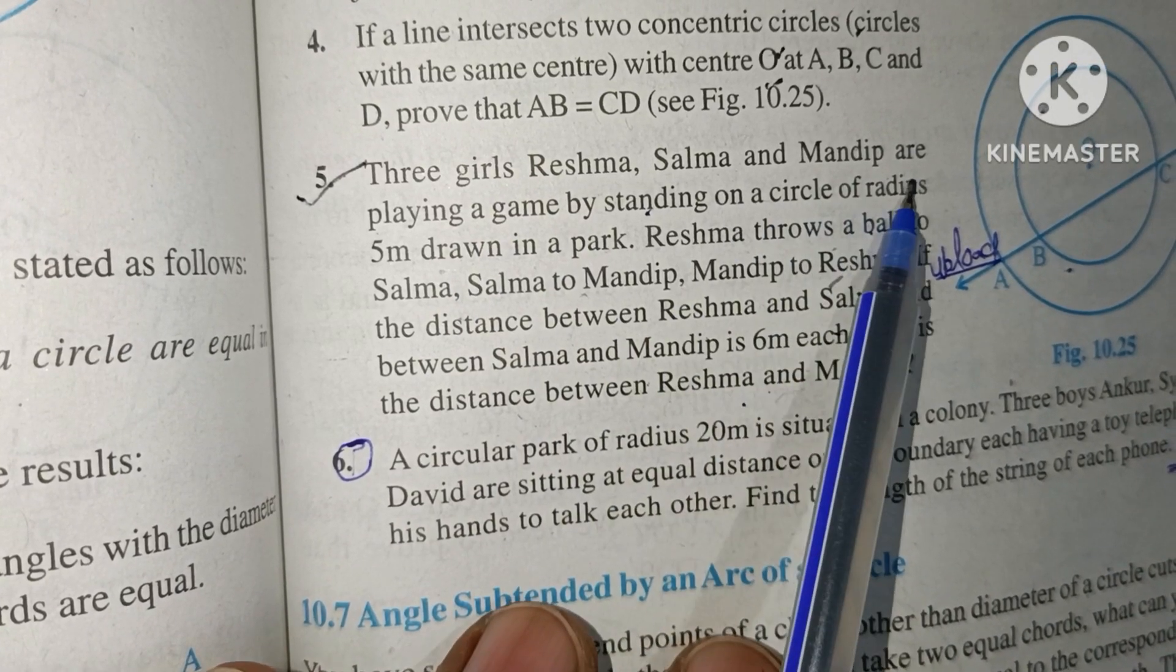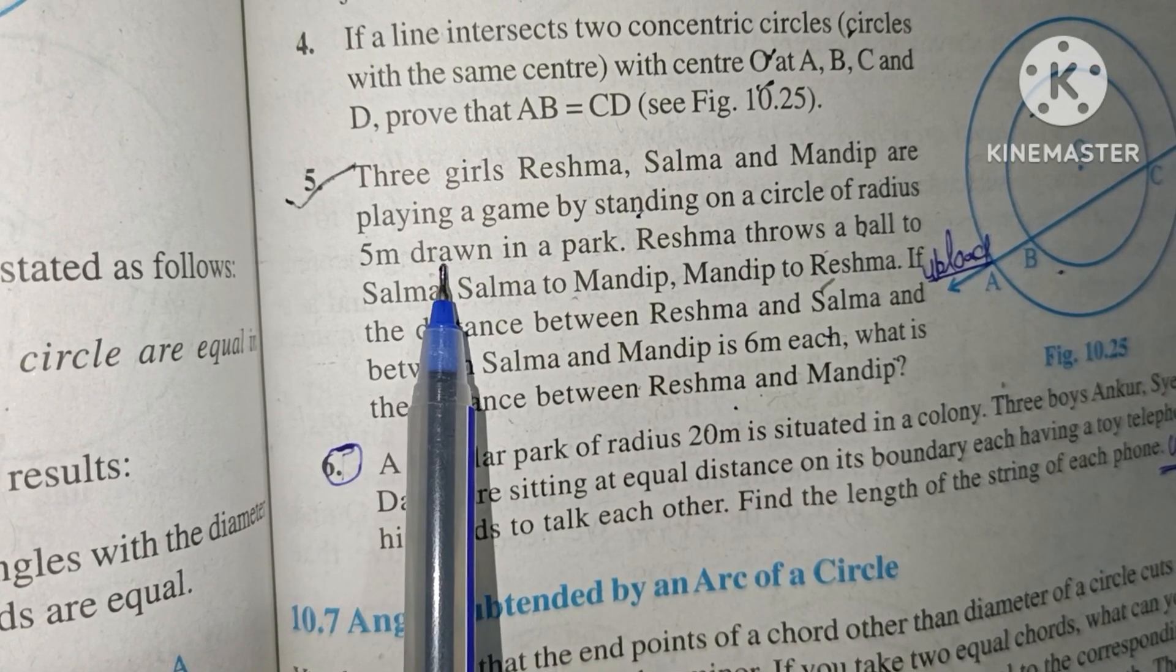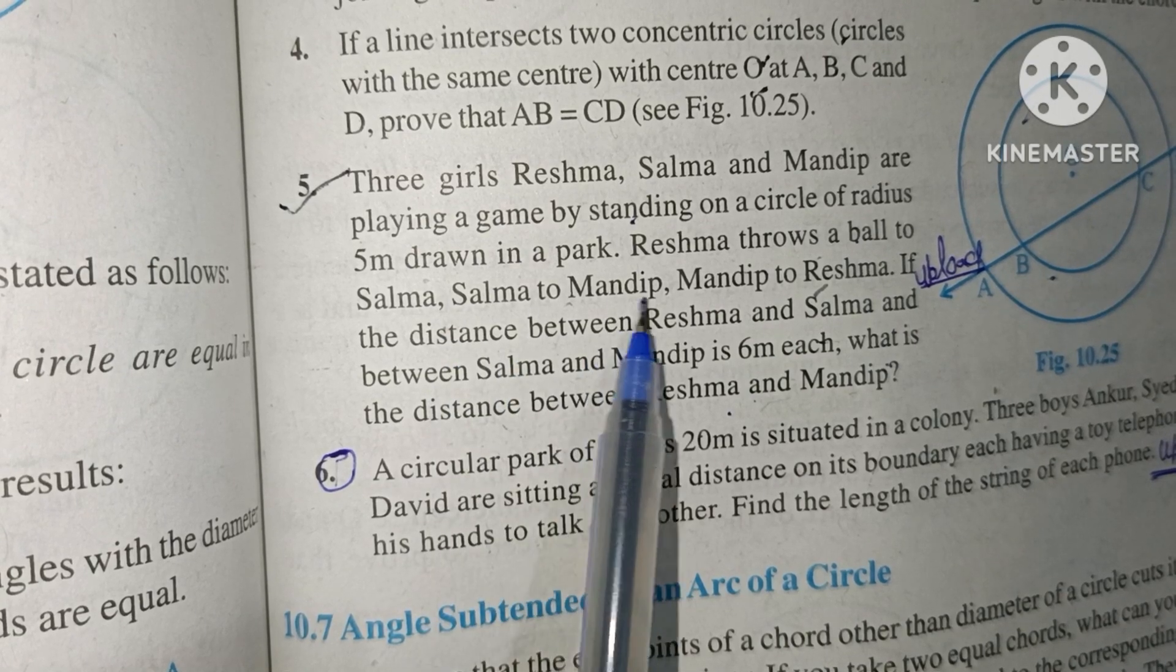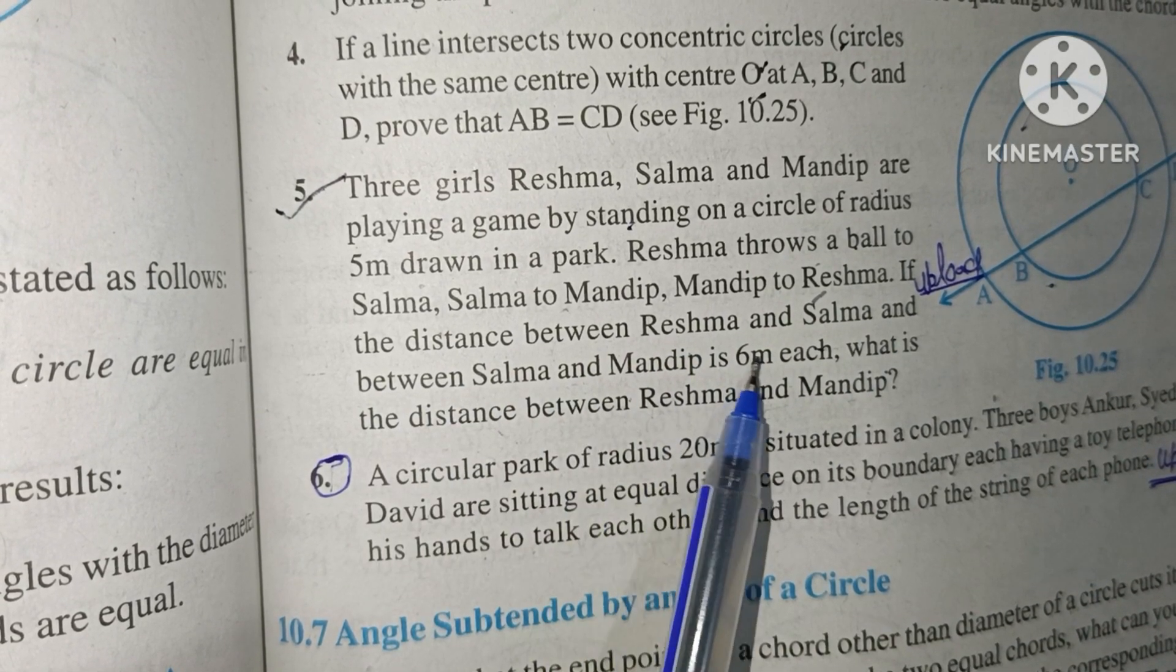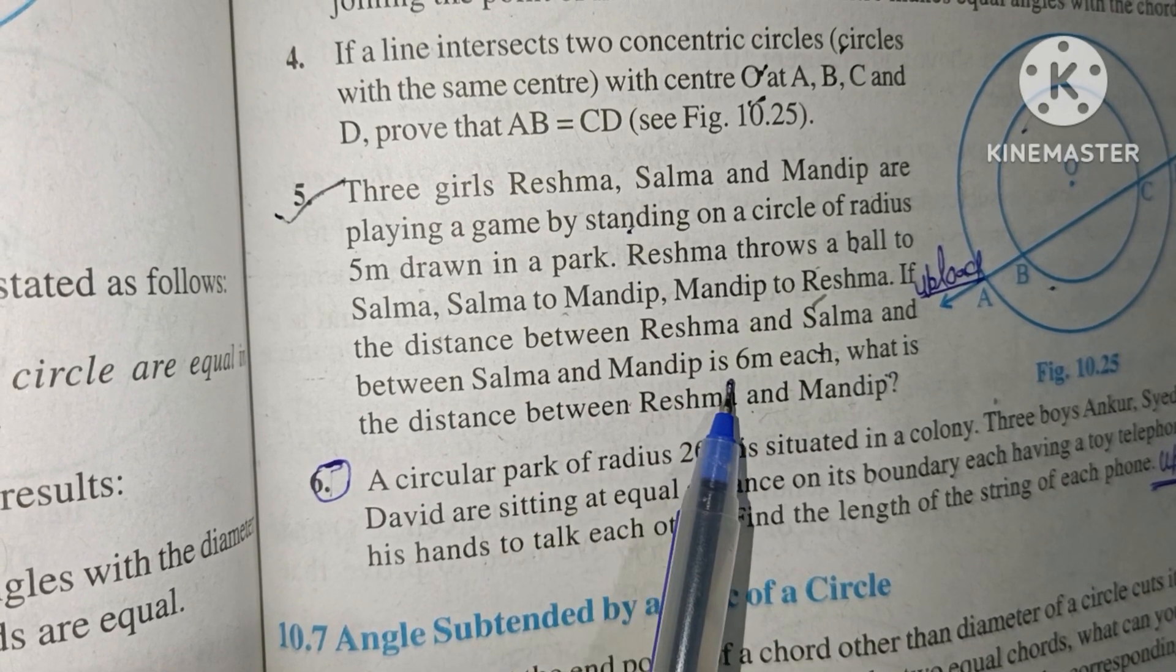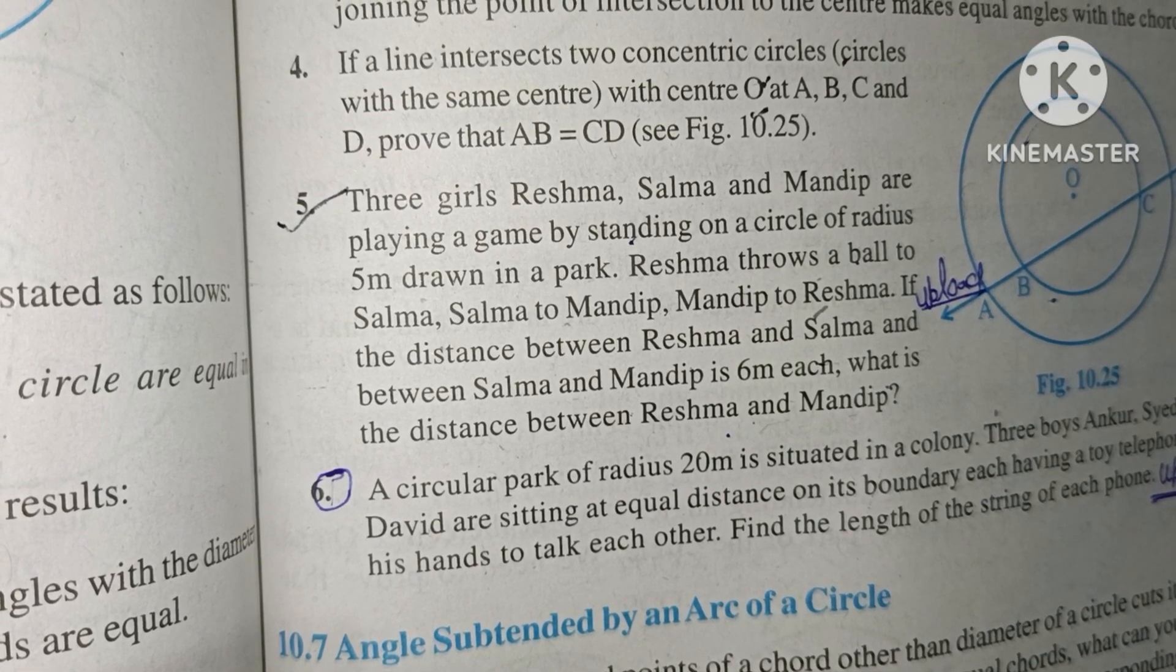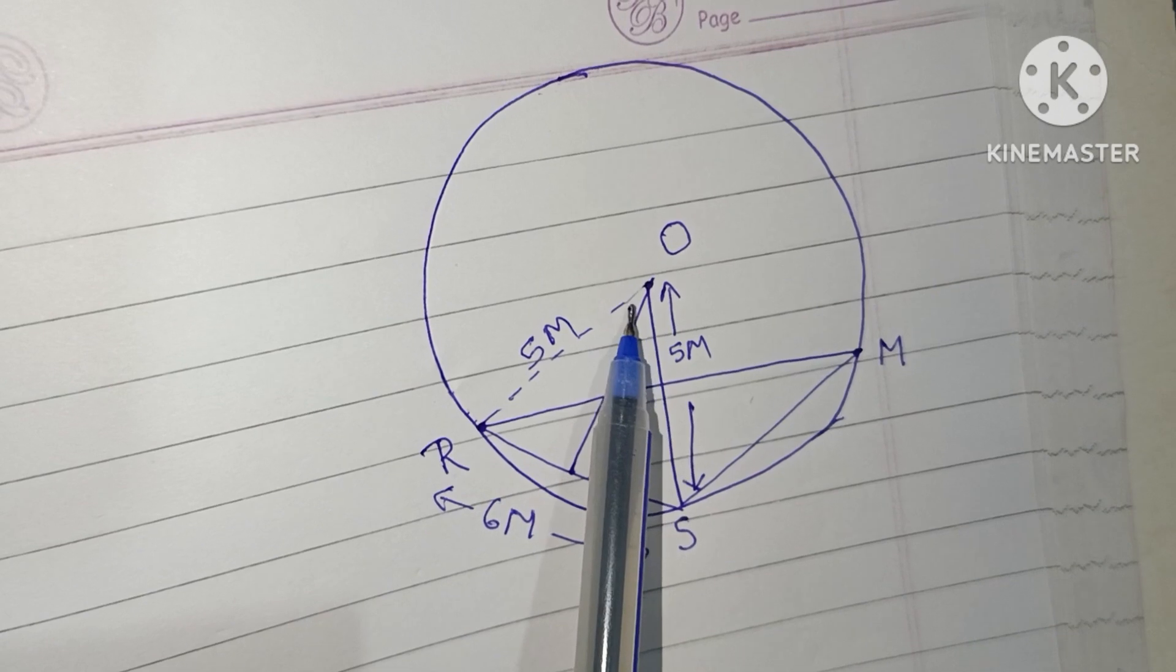Three girls are playing a game by standing on a circular park with radius 5 meters. Reshma throws a ball to Salma, Salma to Mandeep, Mandeep to Reshma. If the distance between Reshma and Salma and between Salma and Mandeep is 6 meters each, what is the distance between Reshma and Mandeep?